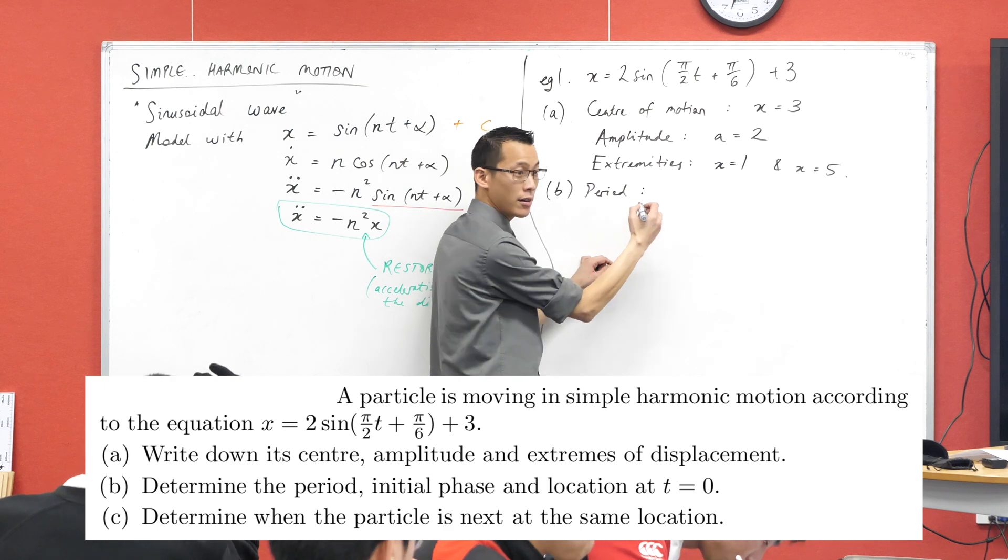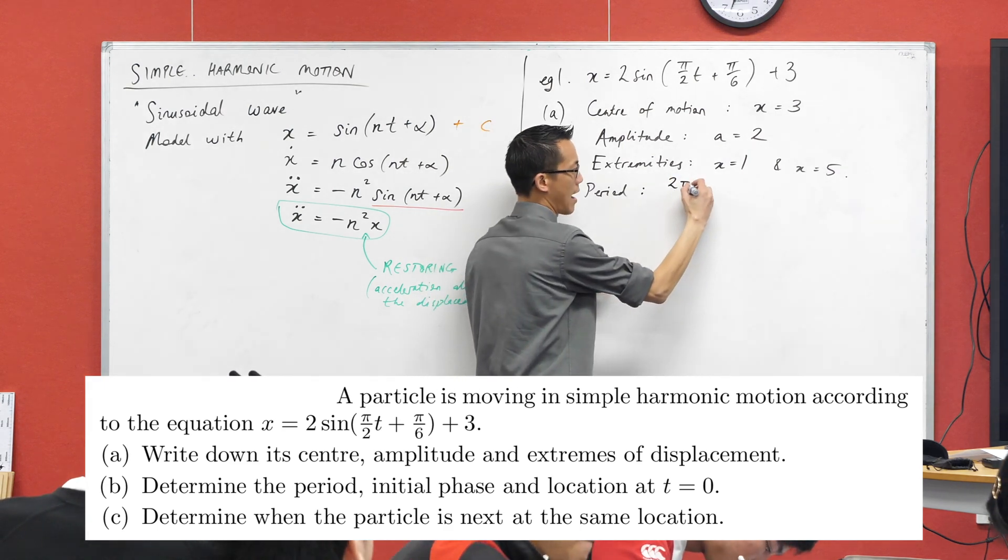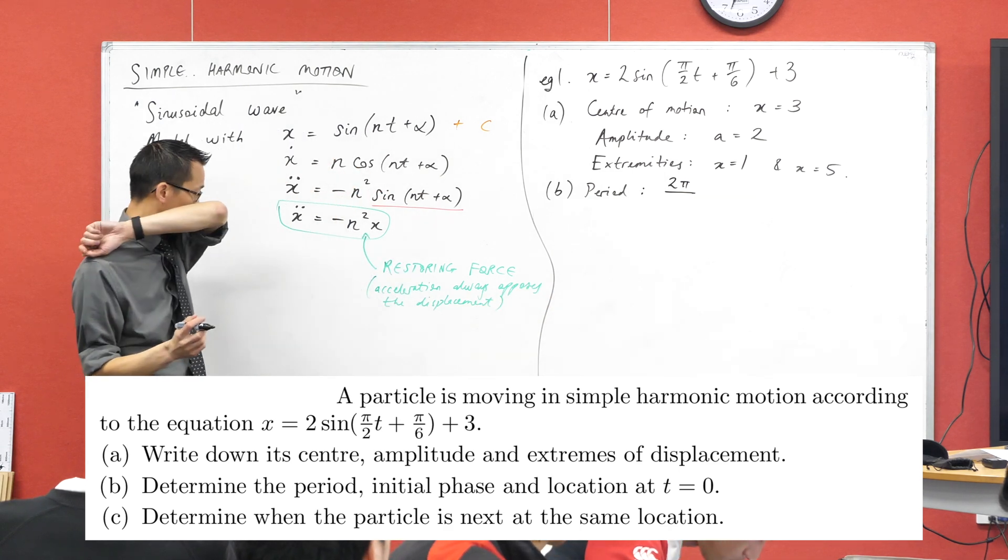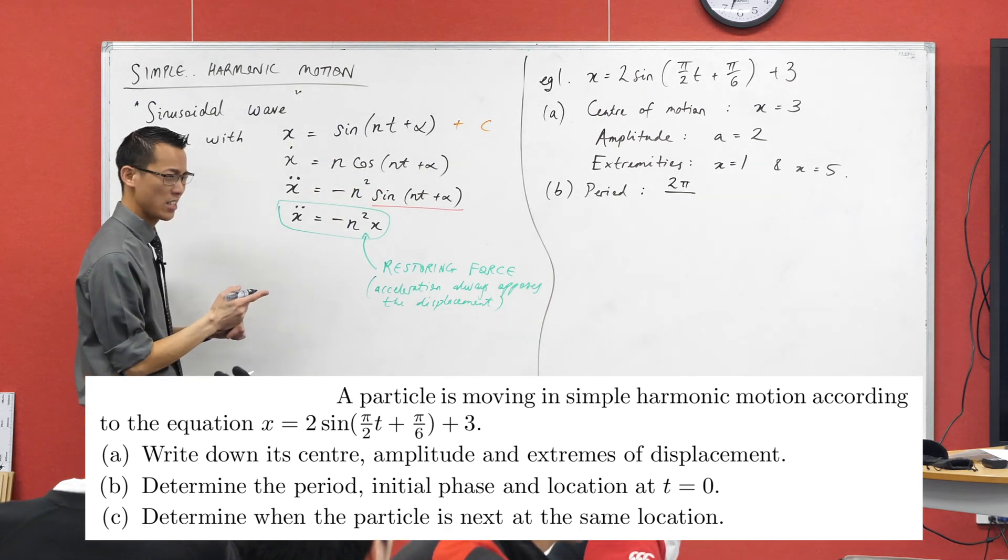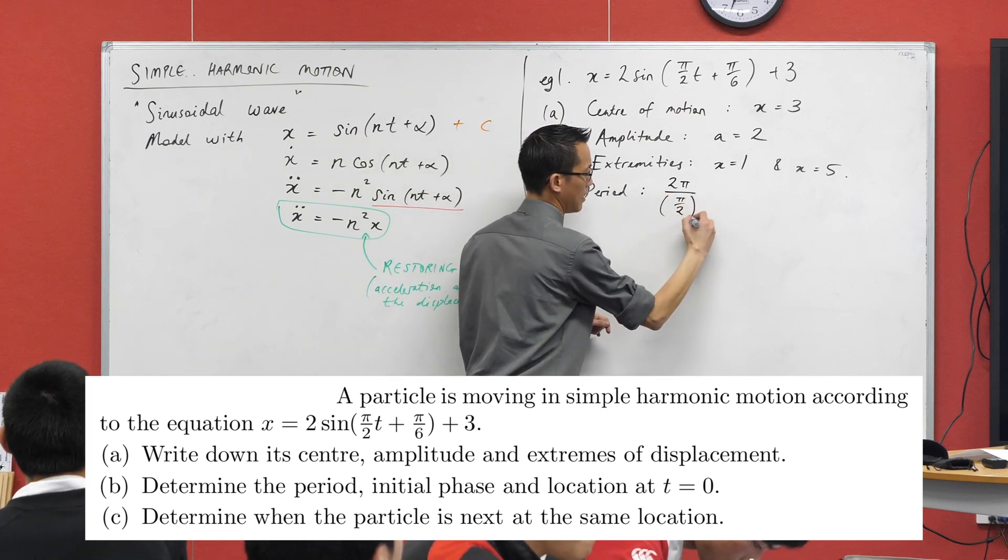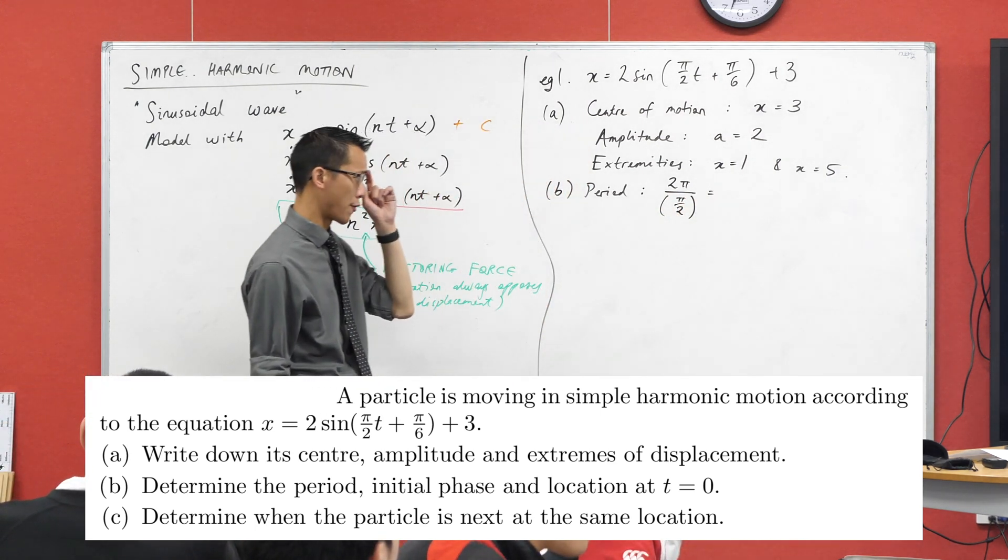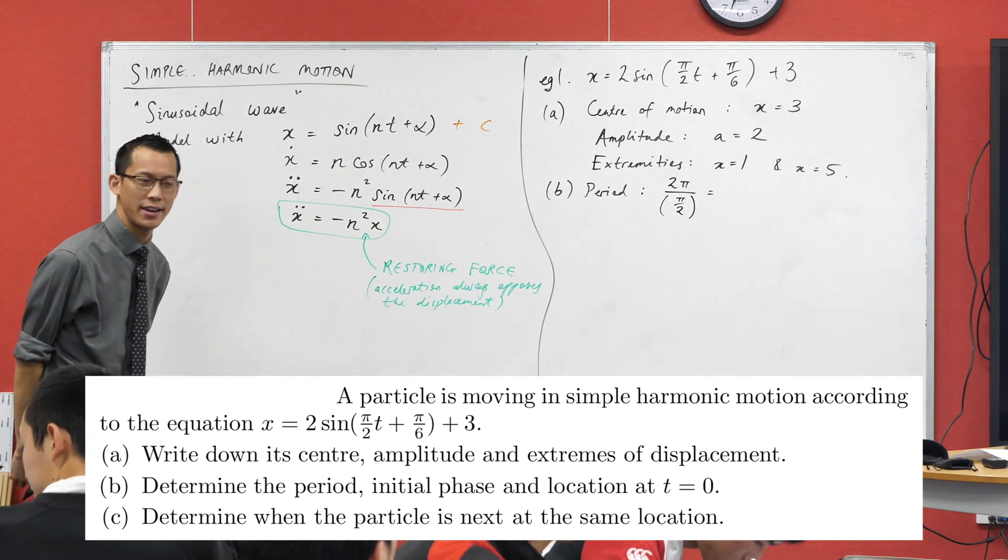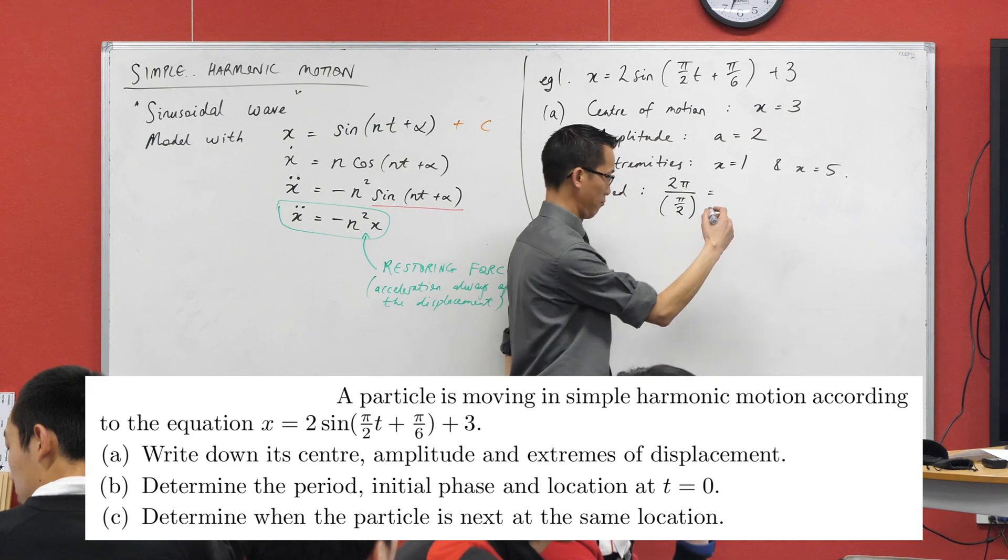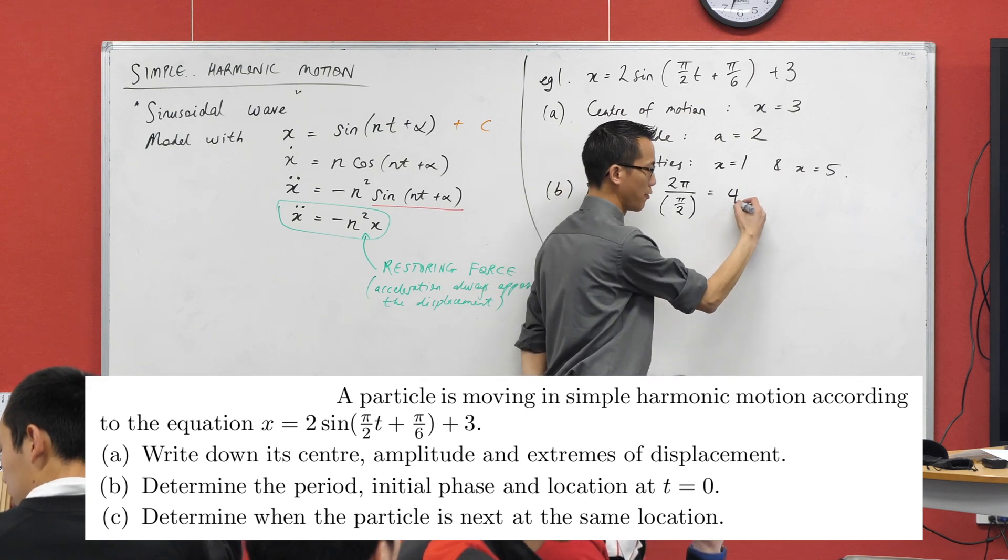So in this case, I'm going to say my period is going to be 2π divided by whatever my coefficient of t is, which in this case is π on 2. So just being careful for my fractions on fractions there, you can see why I introduced brackets. Pies are going to cancel. You get left with 2 divided by a half, which is 4.